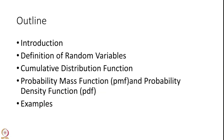In this particular lecture, I am first going to introduce why we need a definition of a random variable, then we will define the random variable. Every random variable has a quantity attached to it called the cumulative distribution function. Then we will define two kinds of random variables: discrete and continuous. For discrete we will define the probability mass function, and for continuous random variables we will define probability density functions, and at the end we will give some examples.